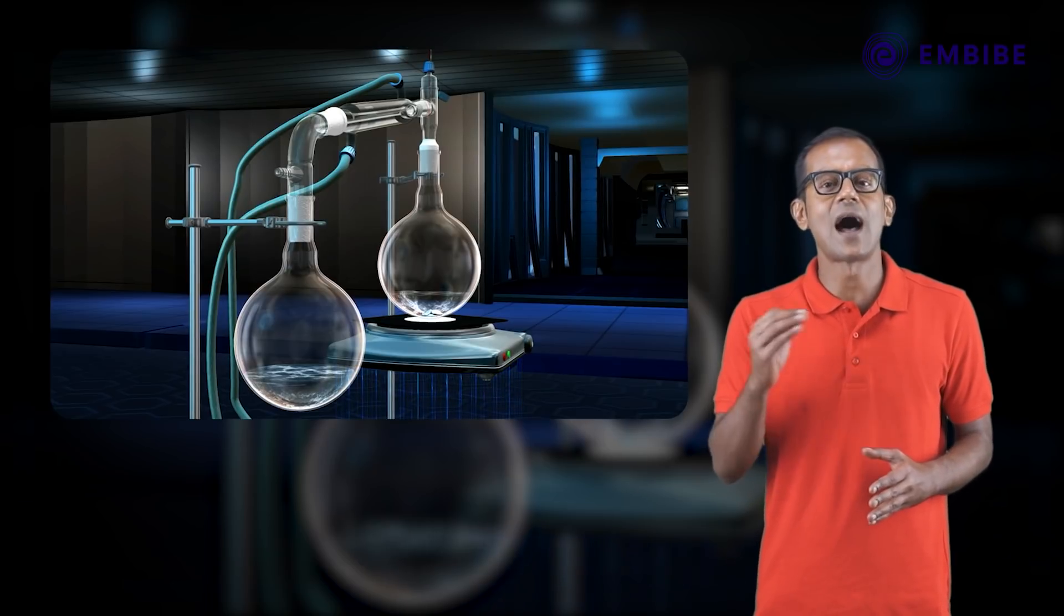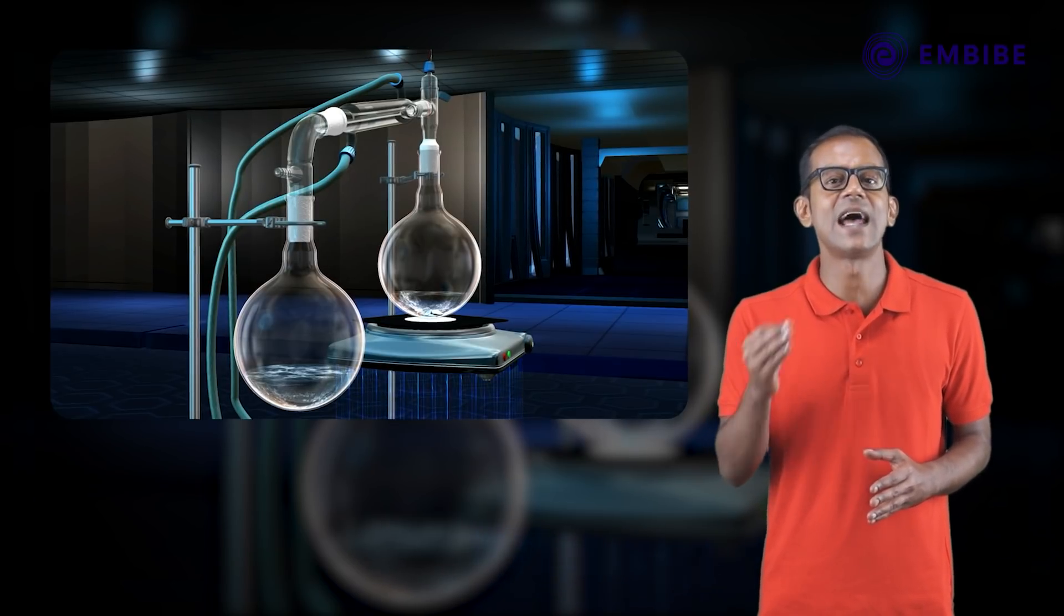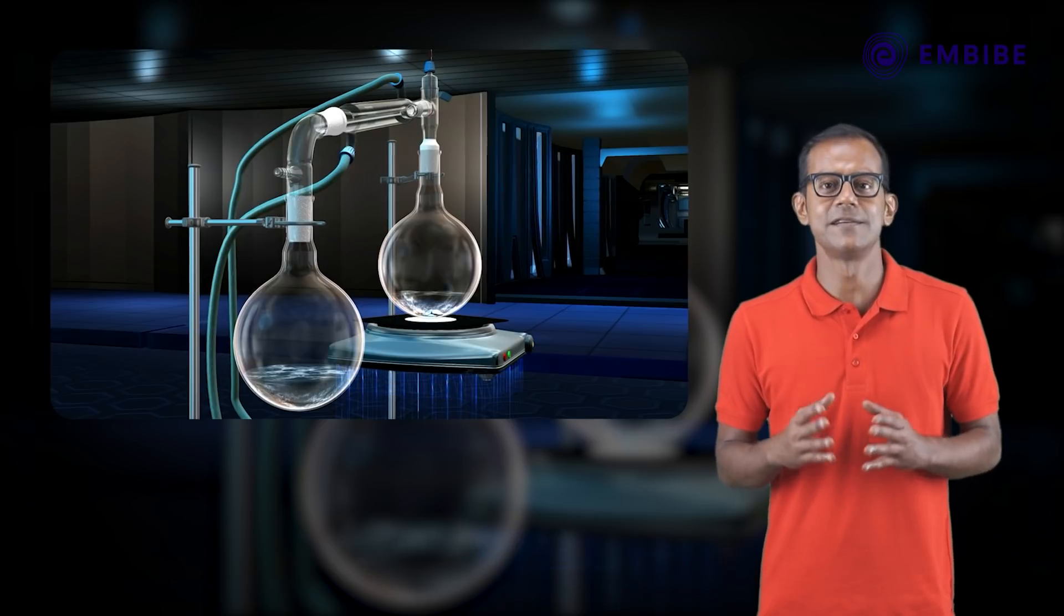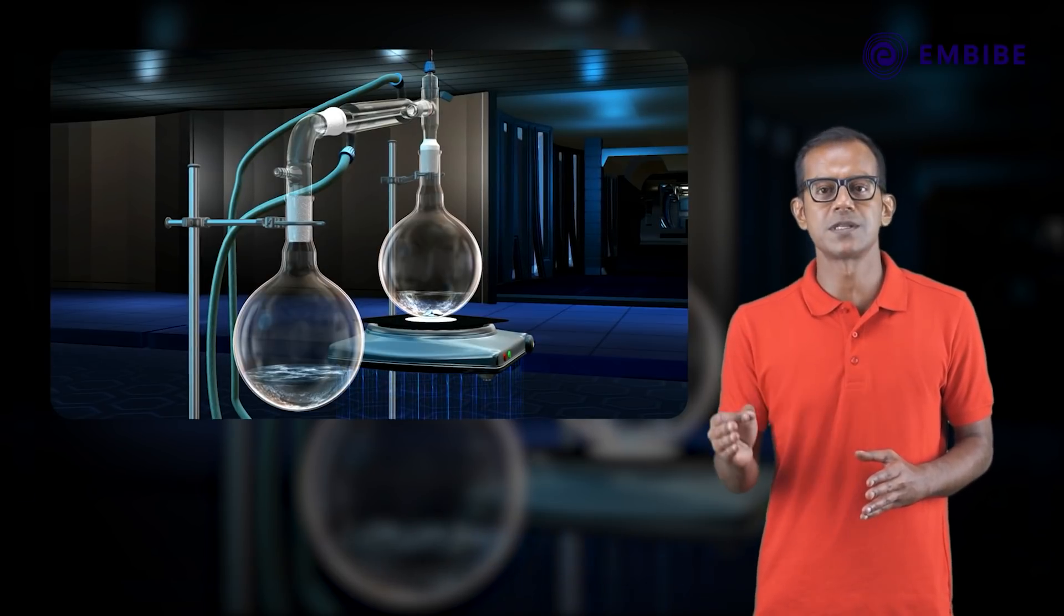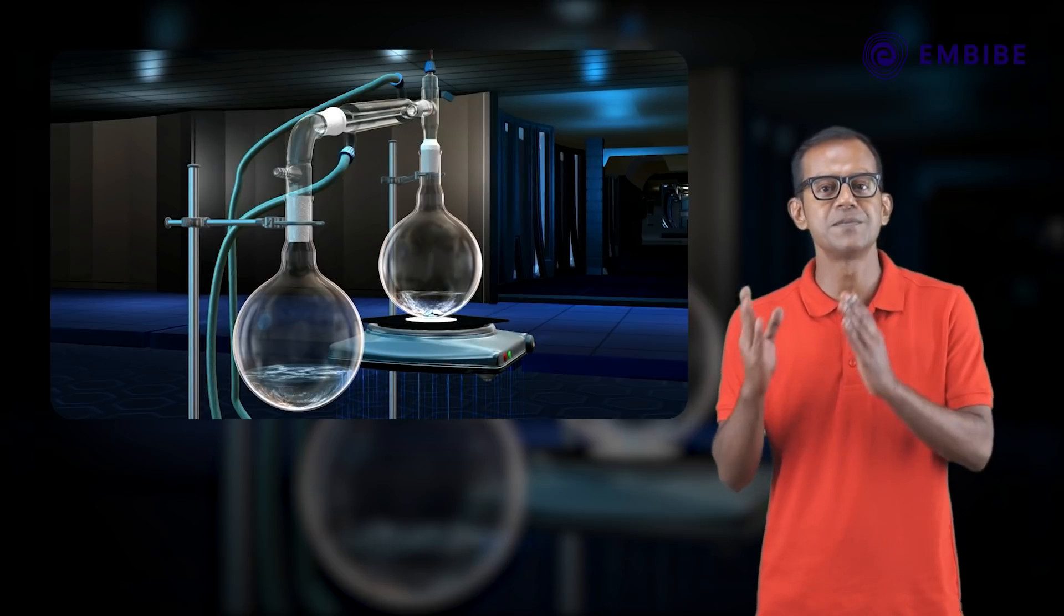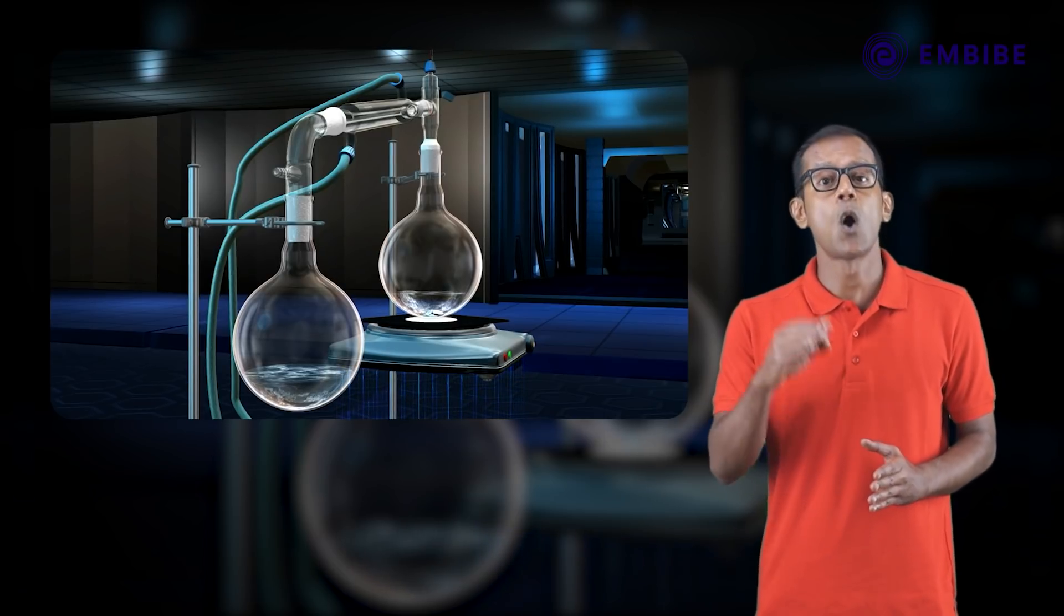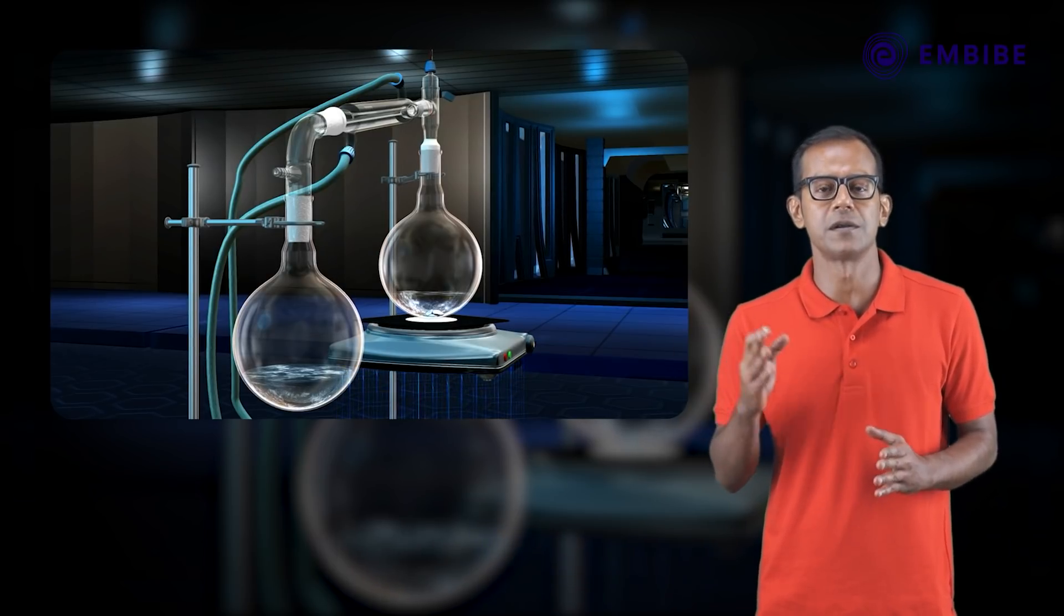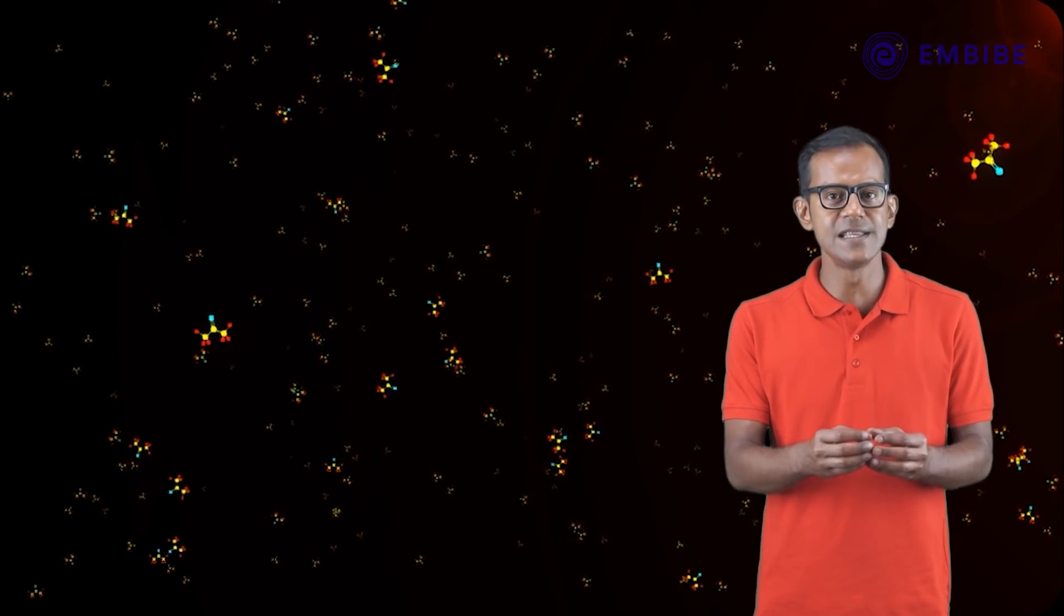When almost all of the acetone has been collected in the receiver, switch off the heater. The liquid which remains in the boiling flask is actually the water, which has a higher boiling point than acetone. In general, simple distillation is the process of separating the components of any homogeneous mixture. The component with the lower boiling point vaporizes and gets condensed, while the one with the higher boiling point is left behind.